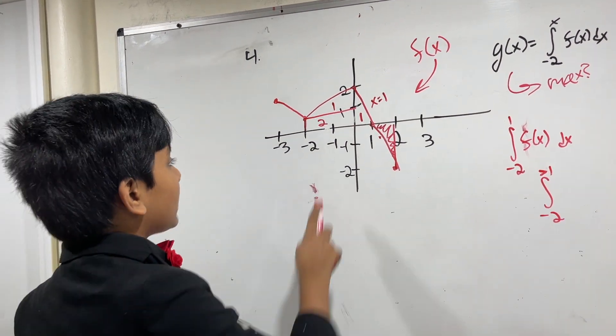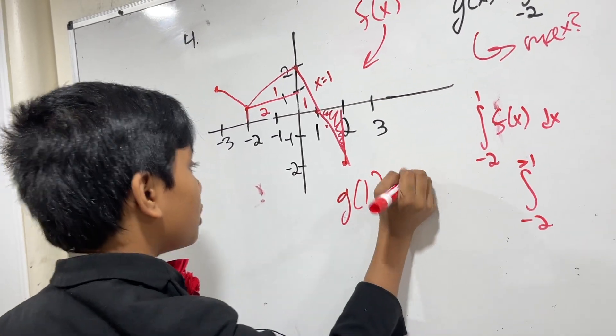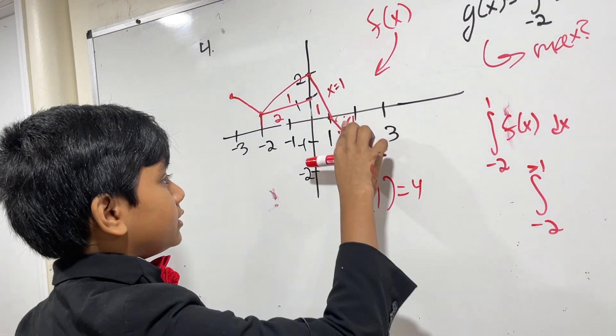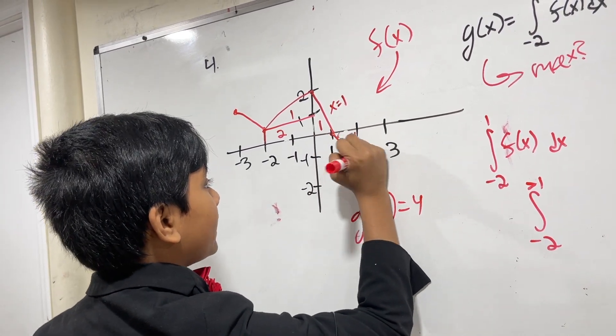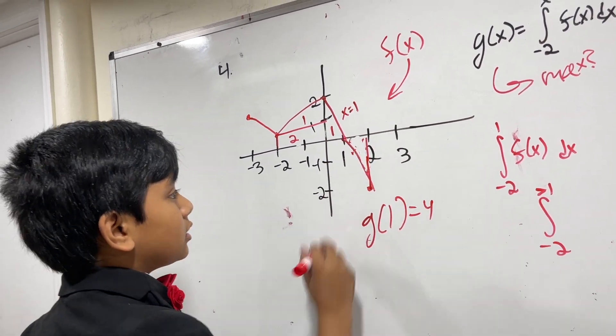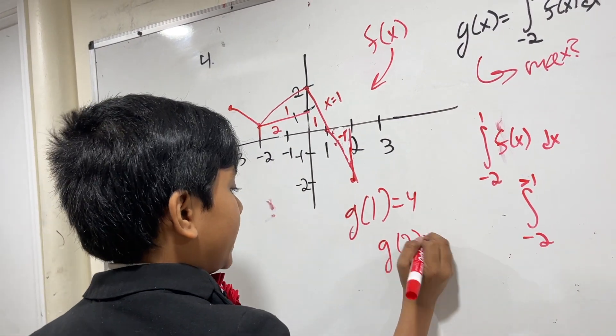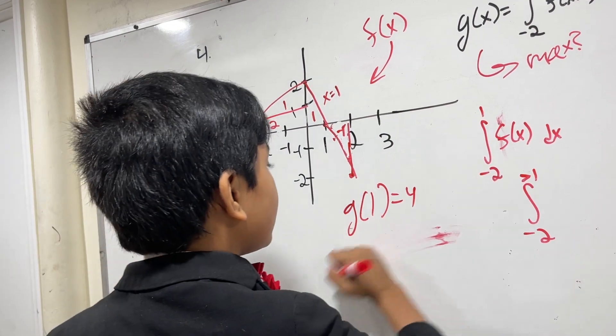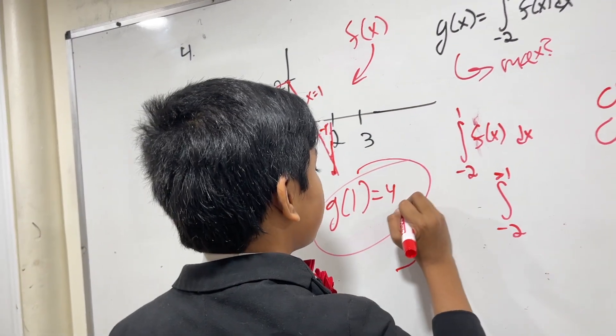And so, the maximum area is 2 plus 1 plus 1, so g of 1 is equal to 4. And, of course, you can see that if we had went any further, then this negative triangle, which has a total area of minus 1, would have brought that area down to 3. So, that's why g of 1 is the maximum.